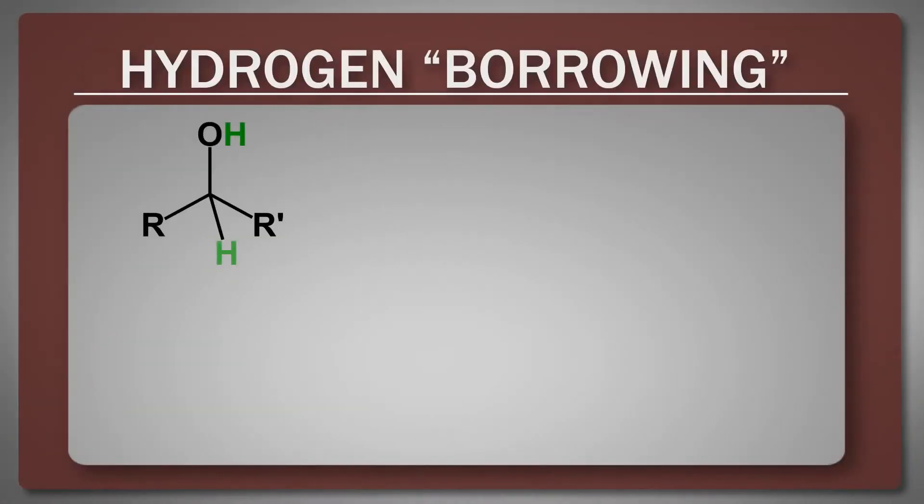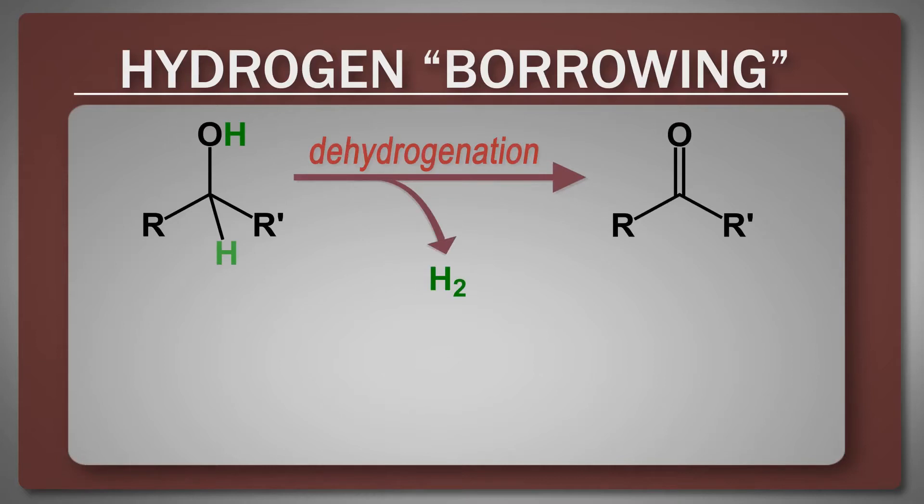Conceptually, you can think about taking a widely available chemical feedstock, like an alcohol, and dehydrogenating that to obtain hydrogen as well as a much more reactive aldehyde or ketone that can be further functionalized to generate a new carbon element bond.